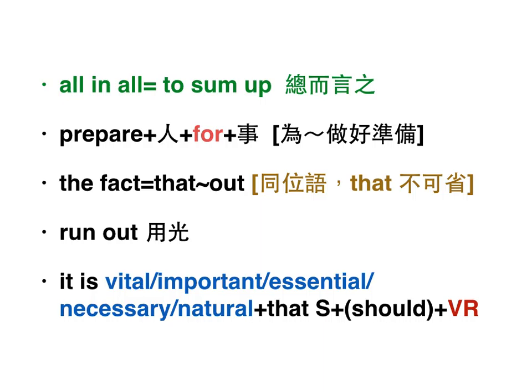All in all，就是to sum up，總而言之要做總結。Futuristic devices prepare us for a better tomorrow，未來的設備為我們準備更好的明天。Nevertheless，就是however，前面講好的後面要講問題，所以中間用nevertheless。The fact that energy resources are running out is a worsening problem。